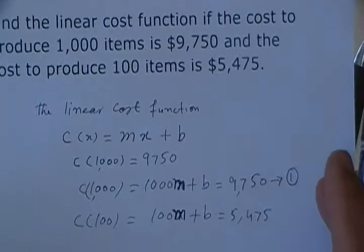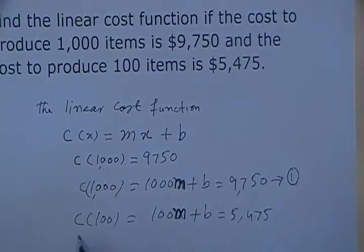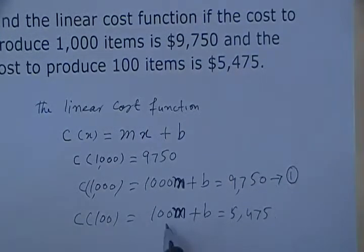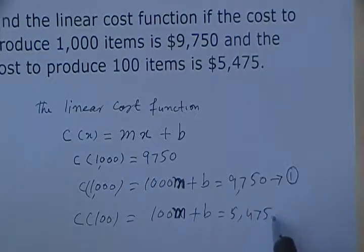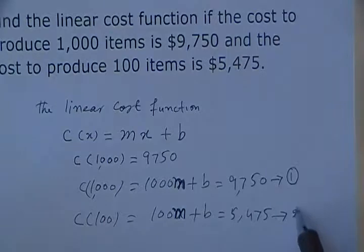So C of 100, that's 100m plus b equals 5,475. Let me call this equation two.